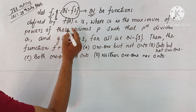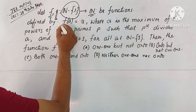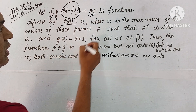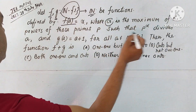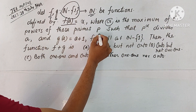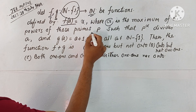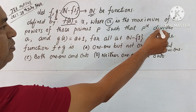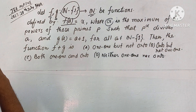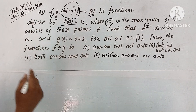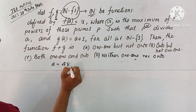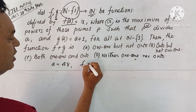F is defined as F(a) equal to alpha, where alpha is the maximum power of the prime P — those prime P such that P-alpha divides A. So, if A equals 48, then F of A is how much?